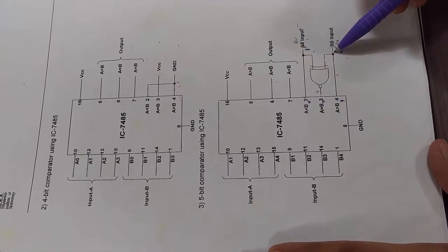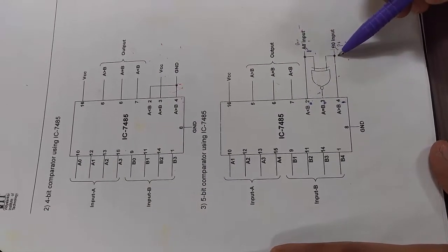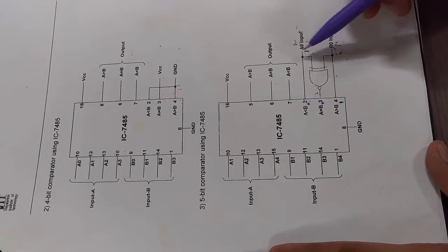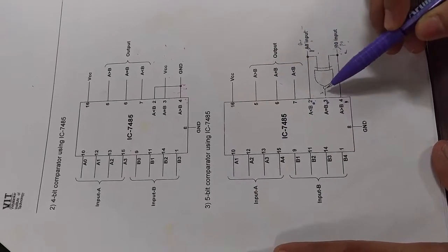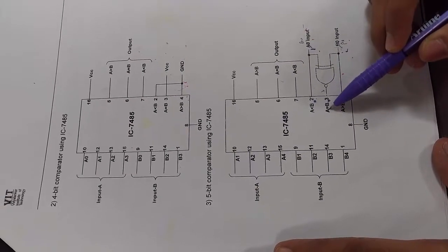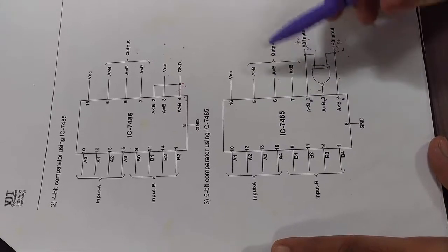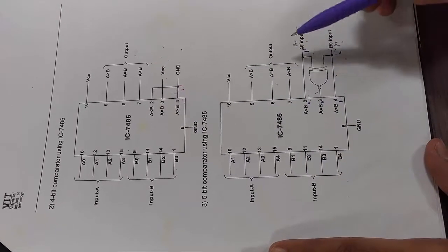When both of them will be 0 or both of them will be 1, both of them 1 is not possible actually. If both of them are 0, then this output will be 1 and this will make A equal to B. Otherwise, it will be A greater than B or A less than B accordingly.